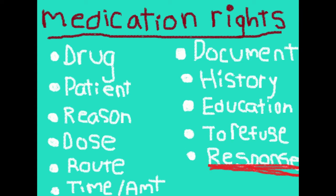And then the right response — you want to make sure that the patient reacts to the medication the way you're hoping for. For example, if they're having difficulty breathing and you give them nebulized albuterol and then they don't have as much difficulty breathing as before, that's a good response. But if it gets worse or they have other symptoms coming on, then that wouldn't be the response you're looking for.